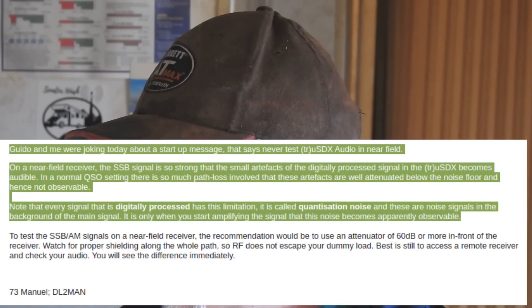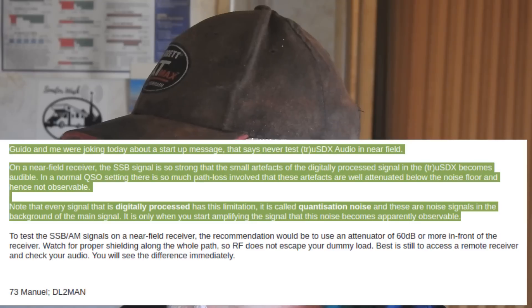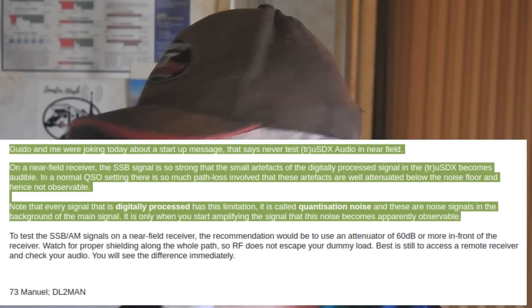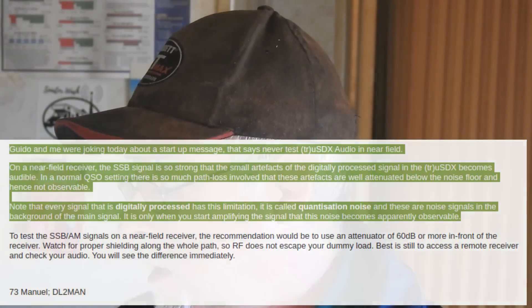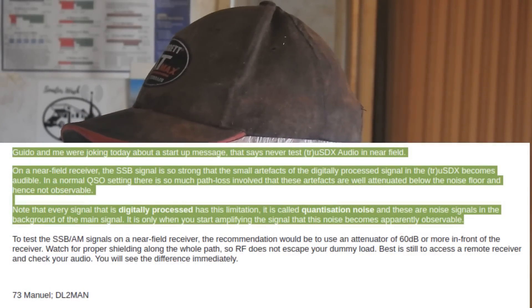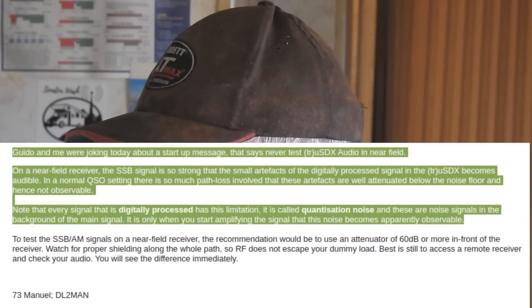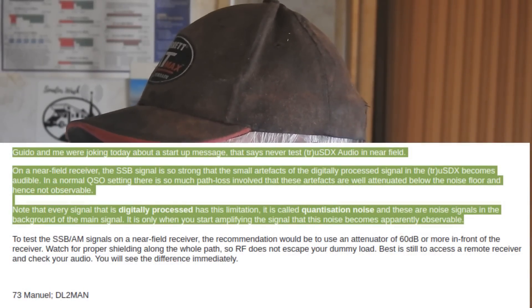Manuel notes that every signal that is digitally processed has this limitation — it's called quantization noise. With lower bit-rate audio you can hear it; in the earlier days of 8-bit sampling you'd hear a little aliasing, a crinkly tin-foil kind of sound. These noise signals exist in the background of the main signal, and it's only when you start amplifying the signal that this noise becomes apparently observable.